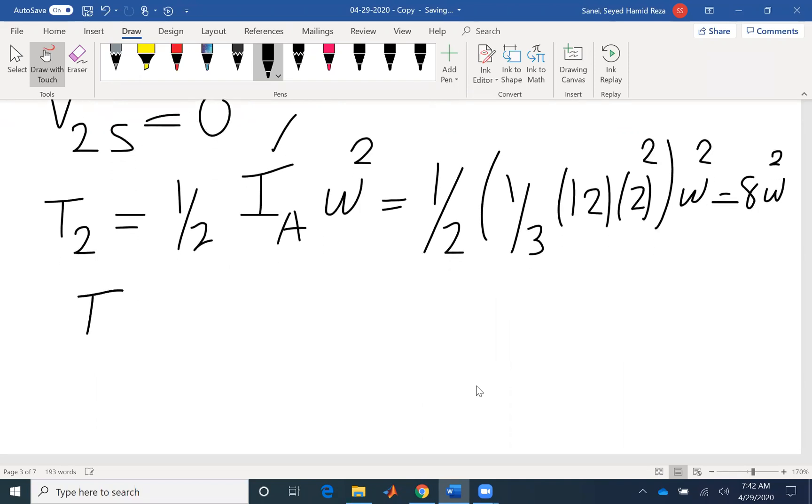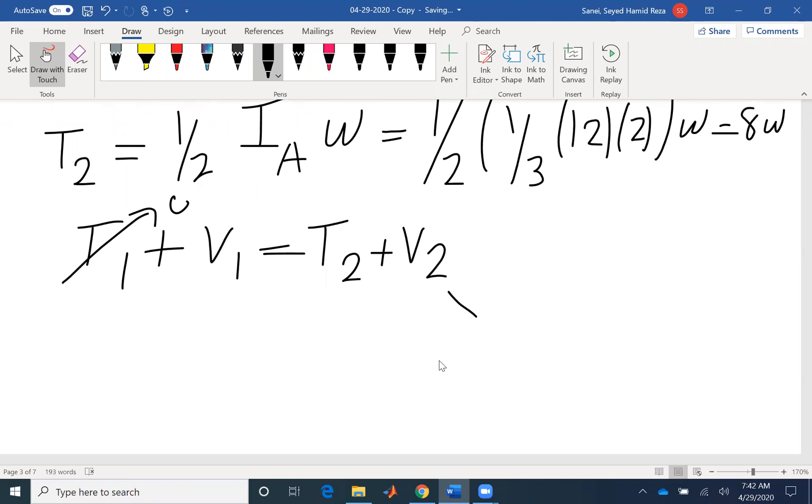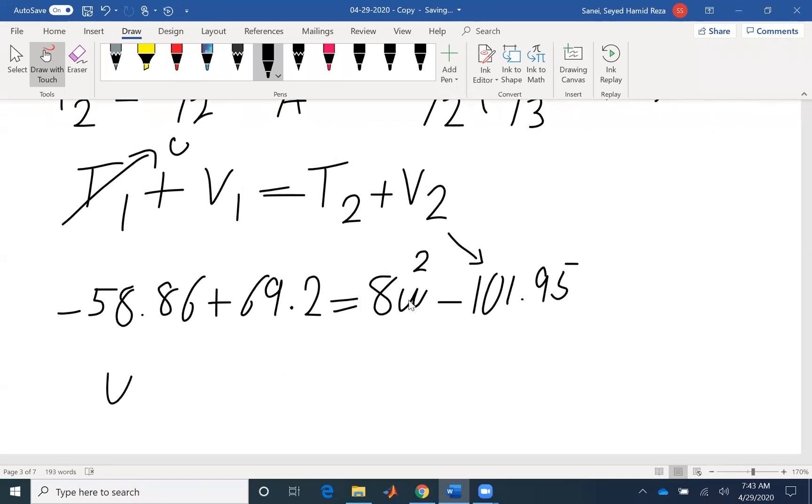Now I will write my conservation of energy. I did not have any initial kinetic energy, so I had only potential. I have two potential energies, both gravitational and spring. For the gravitational was negative 58.86. The elastic was positive. The kinetic energy is 8 omega squared. And for the final case, I do not have any elastic. I only have my gravitational. So the only unknown is omega, which would be 3.75 radians per second.